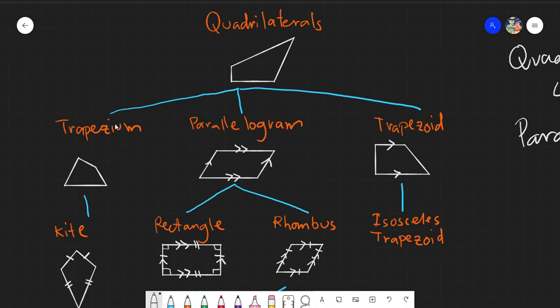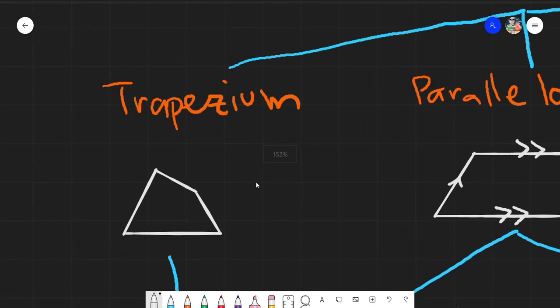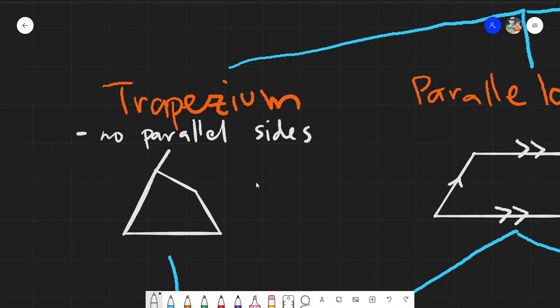But trapezium is by definition, itong trapezium natin would be no parallel sides. Lado parallel sides yan. Ibig sabihin, itong figure natin, pag in-extend natin itong side na to, itong side na to, they will intersect. No parallel sides.